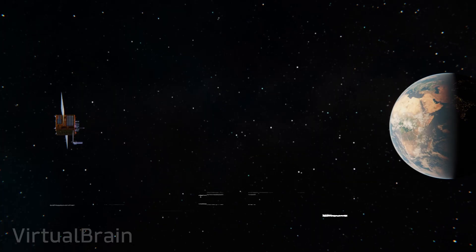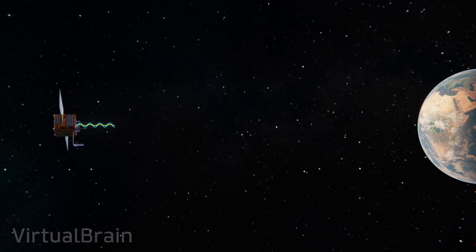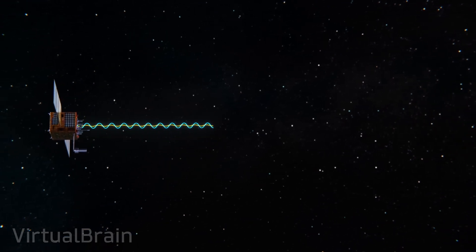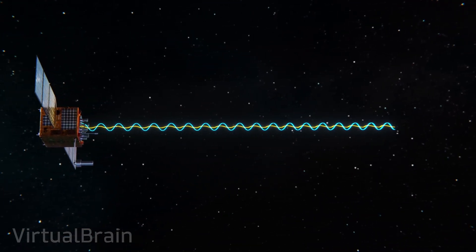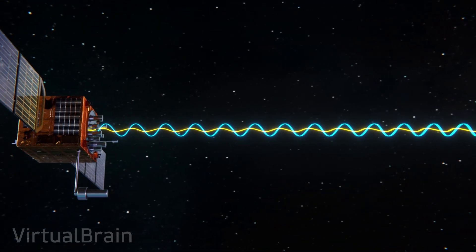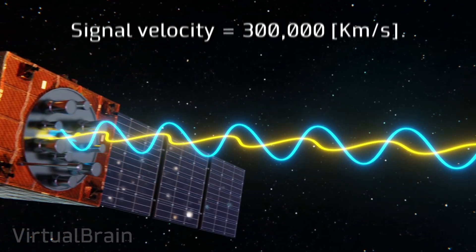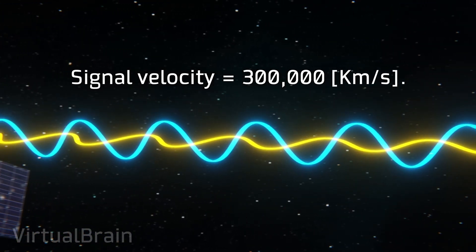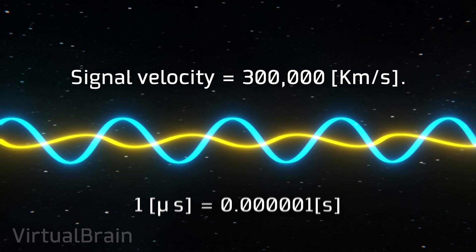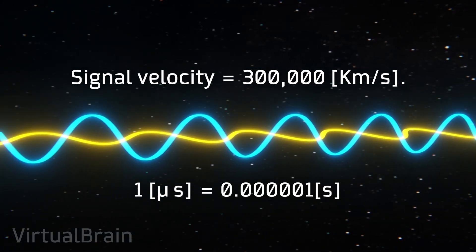First, regarding the accuracy of the instruments, since signals travel at the speed of light, we must use a clock with enough resolution to calculate the distance accurately. To give you a concrete example, since signals travel at 300,000 kilometers per second, a difference of just one microsecond in the measurements would mean an error of 300 meters in the distance calculation.